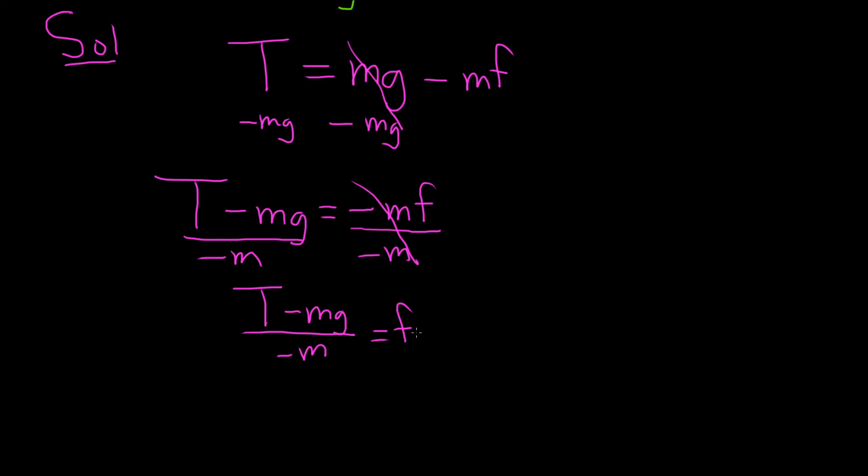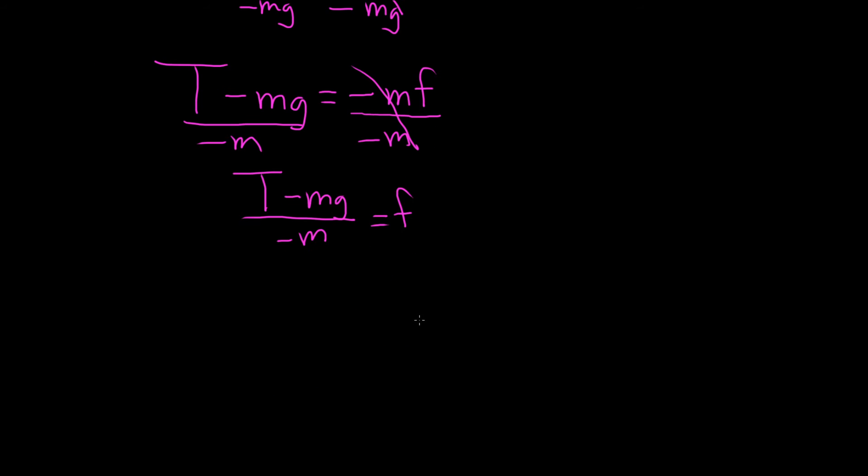That's an okay answer. There's a couple things you can do to make it look better. So one thing you can do is you can write the f on the left hand side like this. So little f is equal to big T minus mg over negative m. So that's a pretty good answer. That's one way to write it.